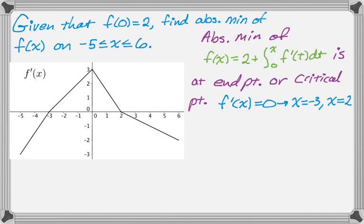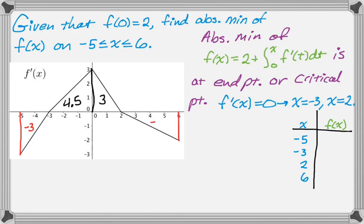So now what you usually do is you make a table. So the table is going to have the end points. It's going to have the critical points. So negative 5, negative 3, 2, and 6 are all the candidates for the absolute max or min. And now what we need to do is we need to figure out those values. So there's going to be a lot of geometry. So I think the area of that region, the area of the region is 3, but it's below the x-axis. So we say negative 3. We have another region here, which has an area of 4.5, 3, and then a negative 4.